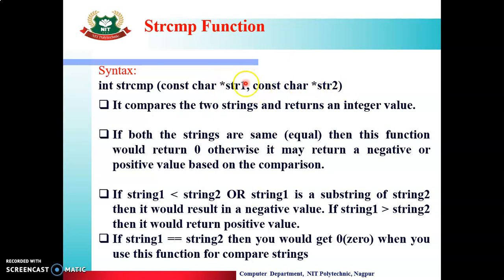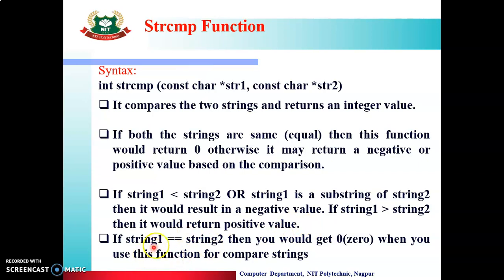Otherwise it may return negative या positive value। अगर दोनों string equal हैं तो 0 return करेगा, लेकिन अगर equal नहीं हैं, different strings हैं दोनों, तो एक तो negative value और positive value return करेगा। If string 1 is less than string 2, अगर string 1 की ASCII value छोटी है string 2 से, then it will return negative value। और अगर string 1 की ASCII value greater है string 2 से, then it will return a positive value। And if string 1 is equal to string 2, then you will get 0 when you use this function to compare strings।